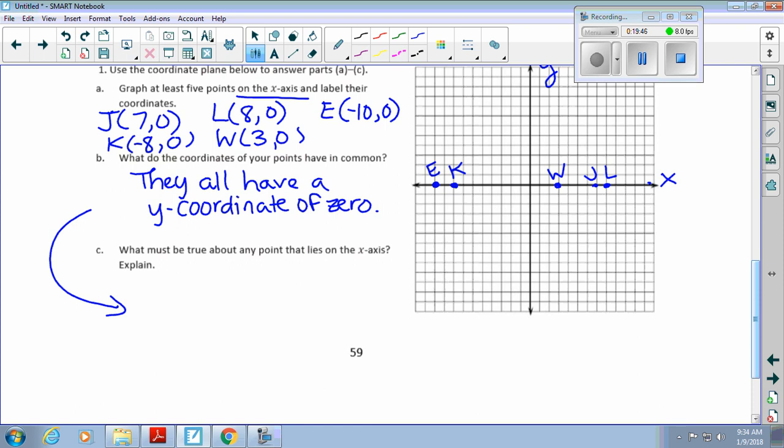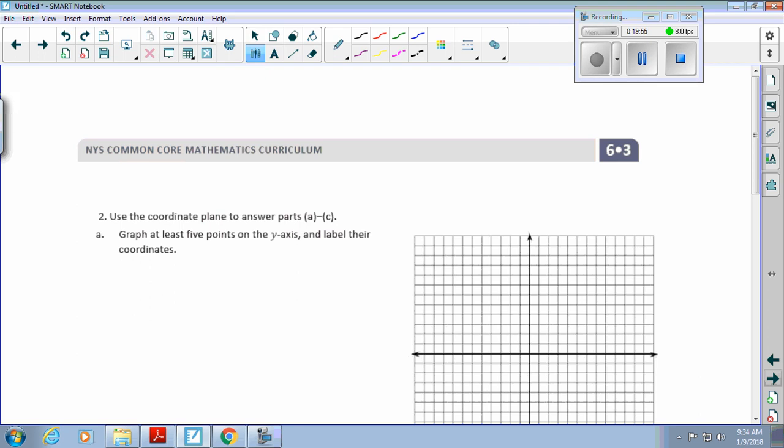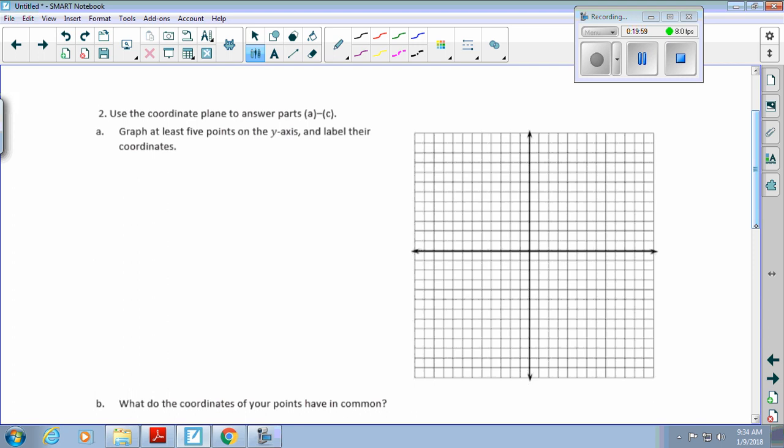We're going to do the same thing now with the y-axis. This is the x-axis. This is the y-axis. Notice they have little arrows on them to indicate that they would keep going forever and ever. Who can give me a point? Jaden, we're going to call this point J. Zero, twelve. J for Jaden, zero, twelve. We're not going over at all, but we're going to go up twelve. One, two, three, four, five, six, seven, eight, nine, ten, eleven, twelve.